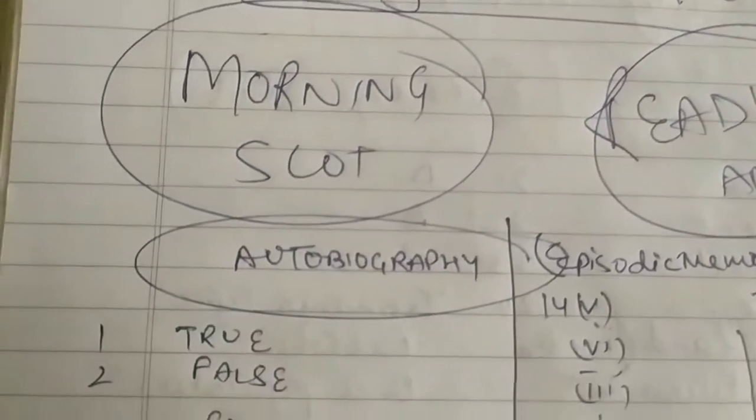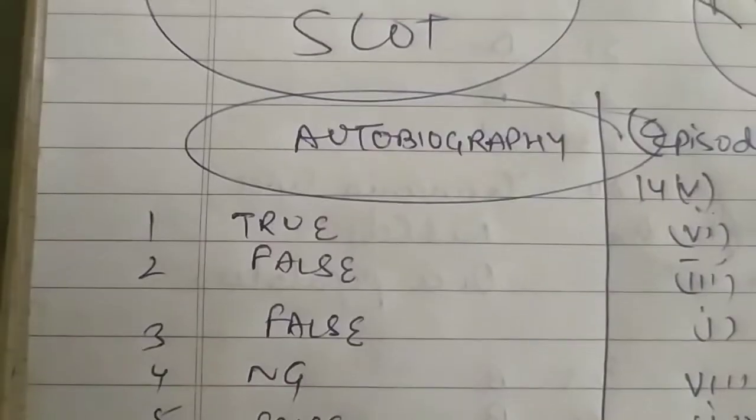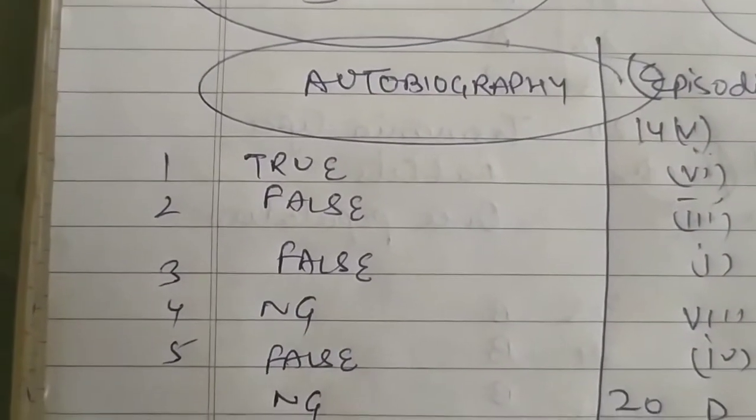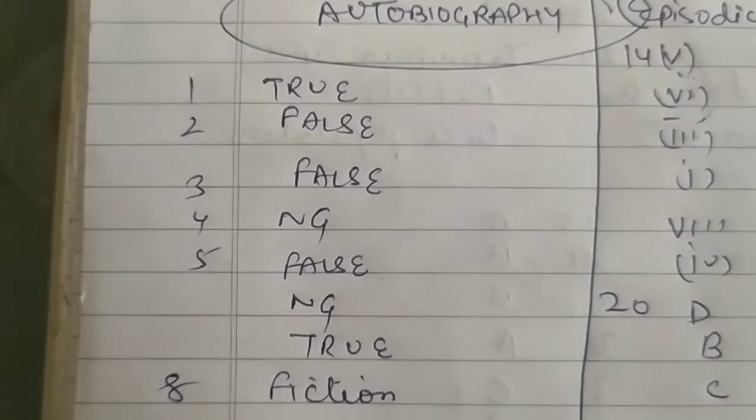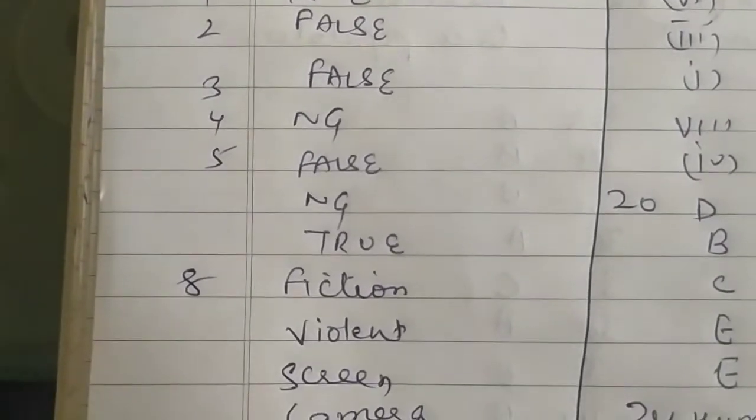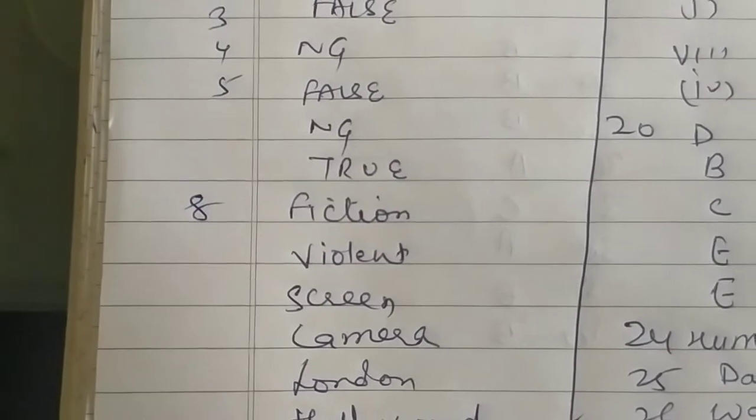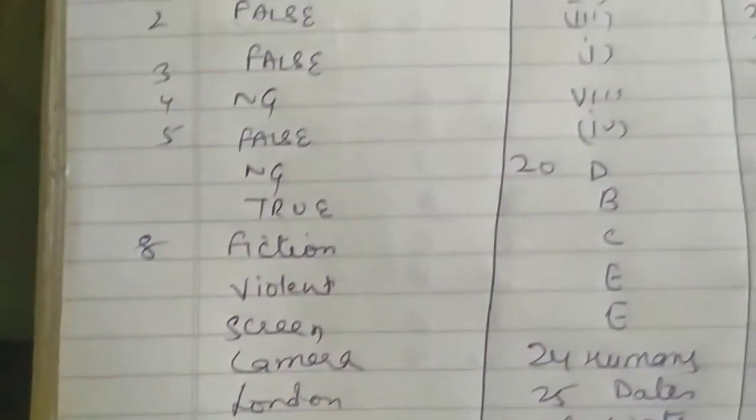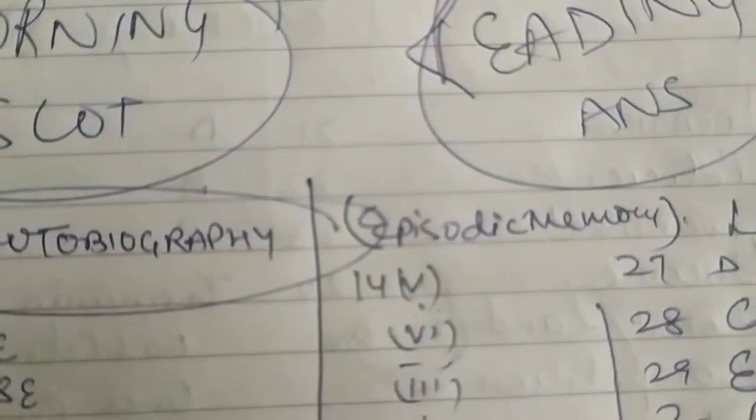The first passage was based on autobiography. So true, false, false, not given, false, and not given, true. Eighth was fiction, ninth was violent, tenth was screen, eleventh was camera, then London, Hollywood. Second passage was on episodic memory.